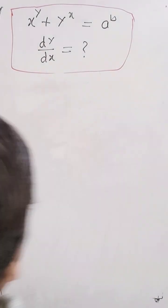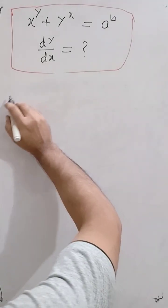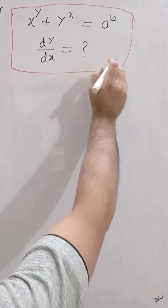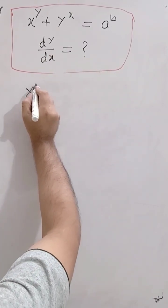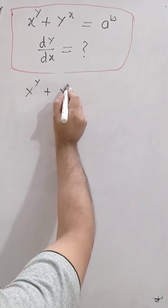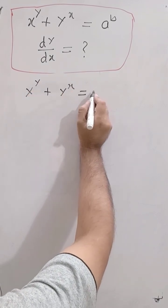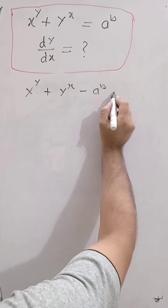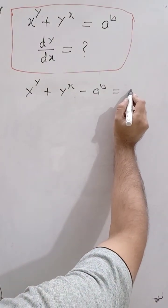You can find it directly within a few seconds by applying a simple method of partial differentiation. So take both to the same side: x to the power y plus y to the power x minus a to the power b. Take this equal to u.